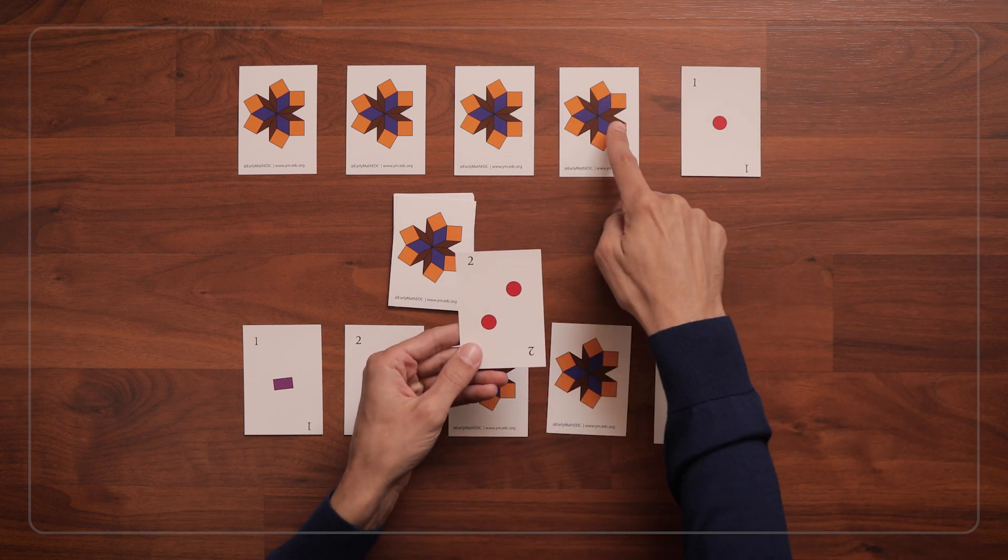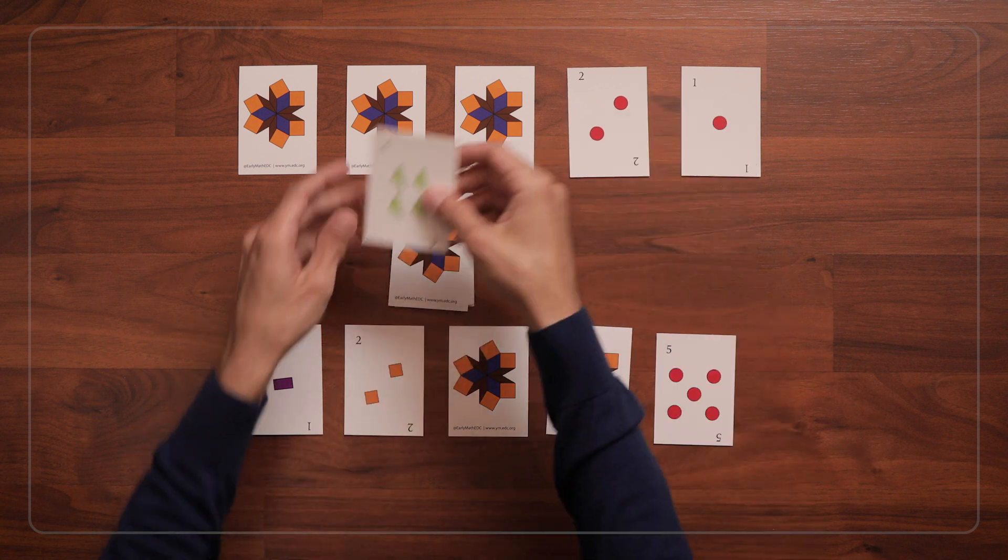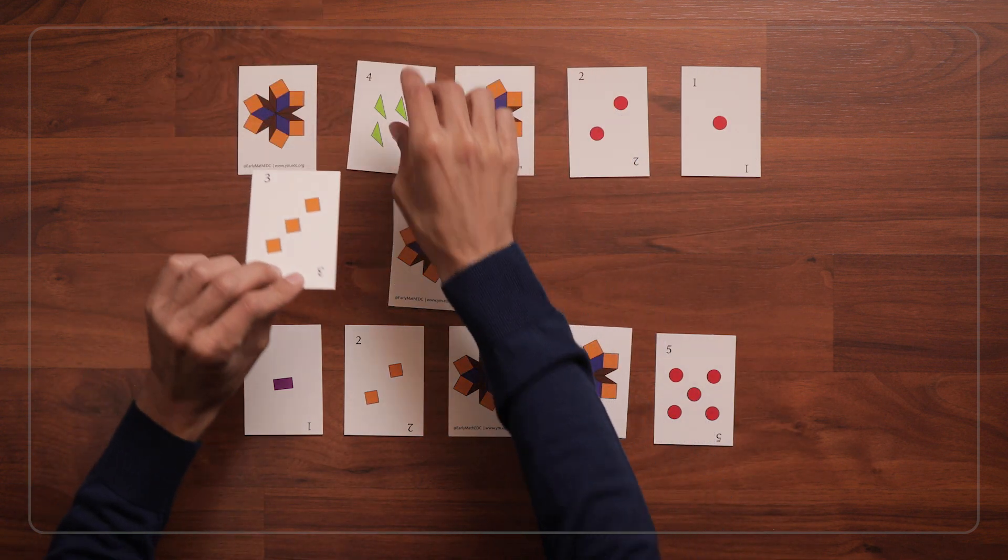When a player turns over a card, you can ask questions about number order and placement. For example, you could say,